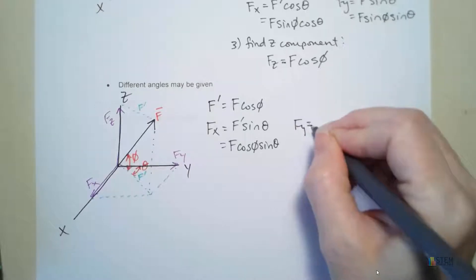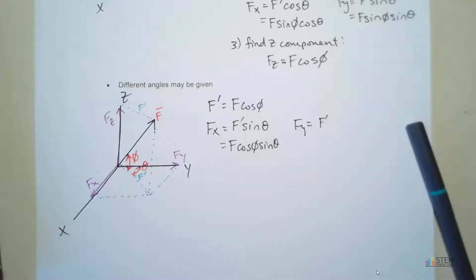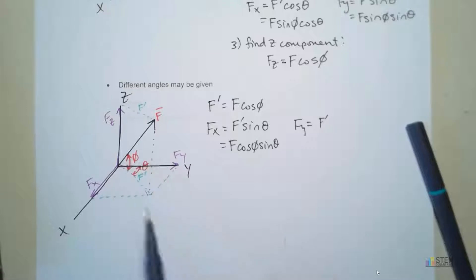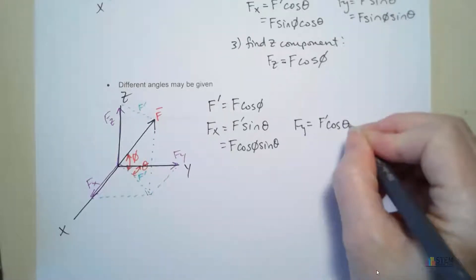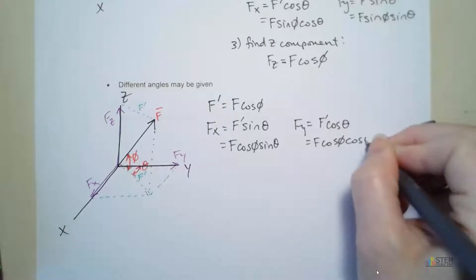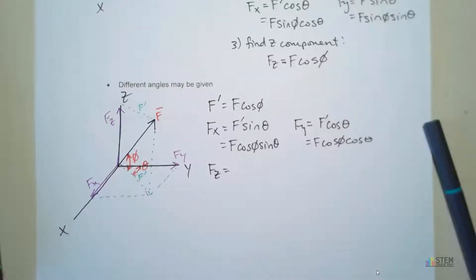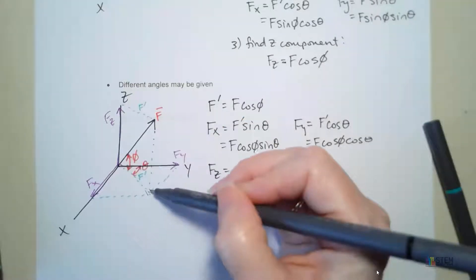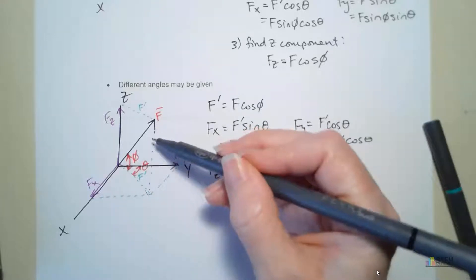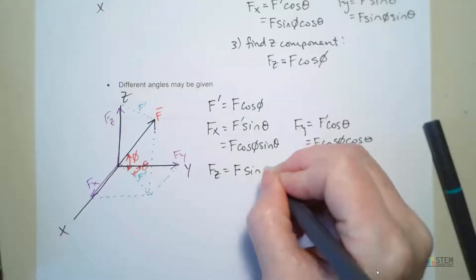For Fy, you're going to do the same thought process. We've got this magnitude F prime — is it going to be sine or cosine? Fy is adjacent to this angle, so we're going to have F prime cosine theta. Plugging in F prime, you've got F cosine phi cosine theta. And what about Fz? Fz is the same as this dashed line — they're parallel, they're the same. This is opposite that phi angle, so you're going to have F sine phi.